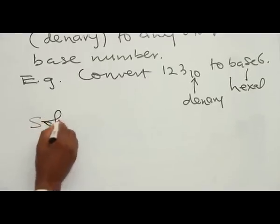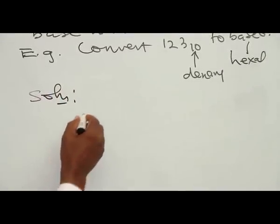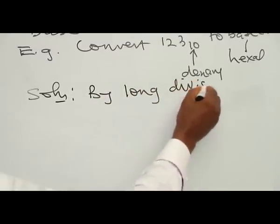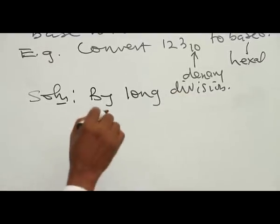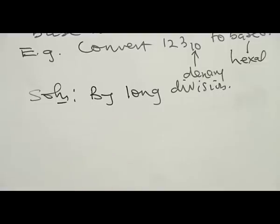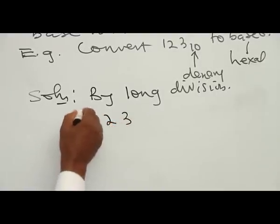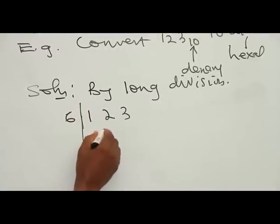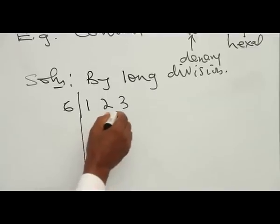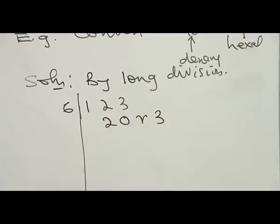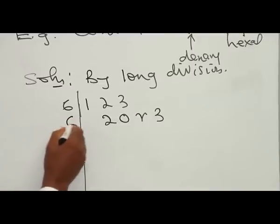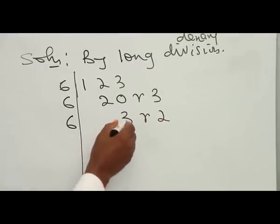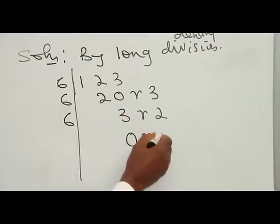Our solution: you carry out a long division process with special interest in the remainder after the division. You write your 123, draw a line, and then divide it by 6. 6 into 12 is 2, and 6 into 3 is 0, the remainder is 3 — you put the remainder down. Then 6 goes into 20 three times with remainder 2.